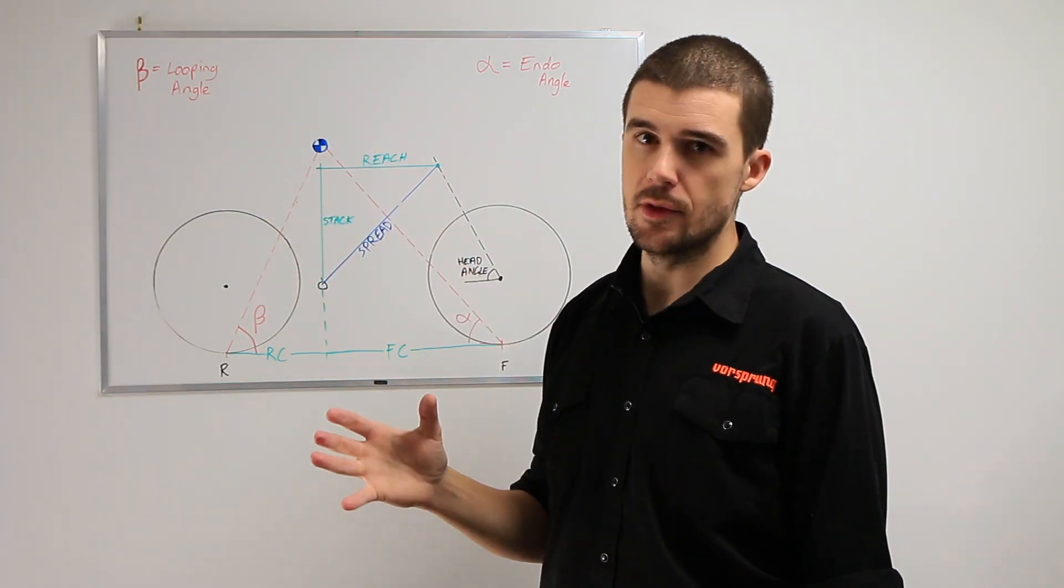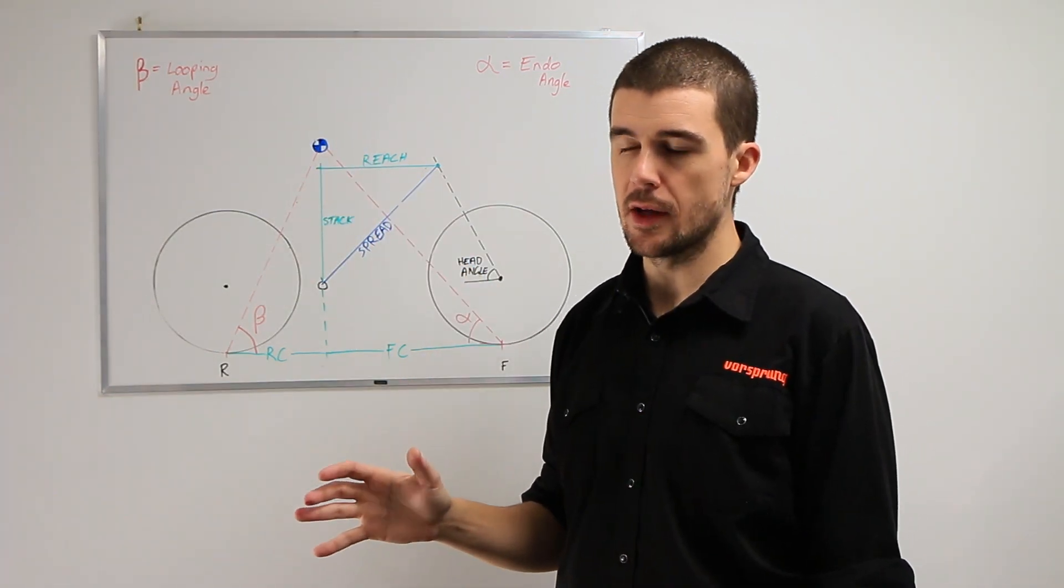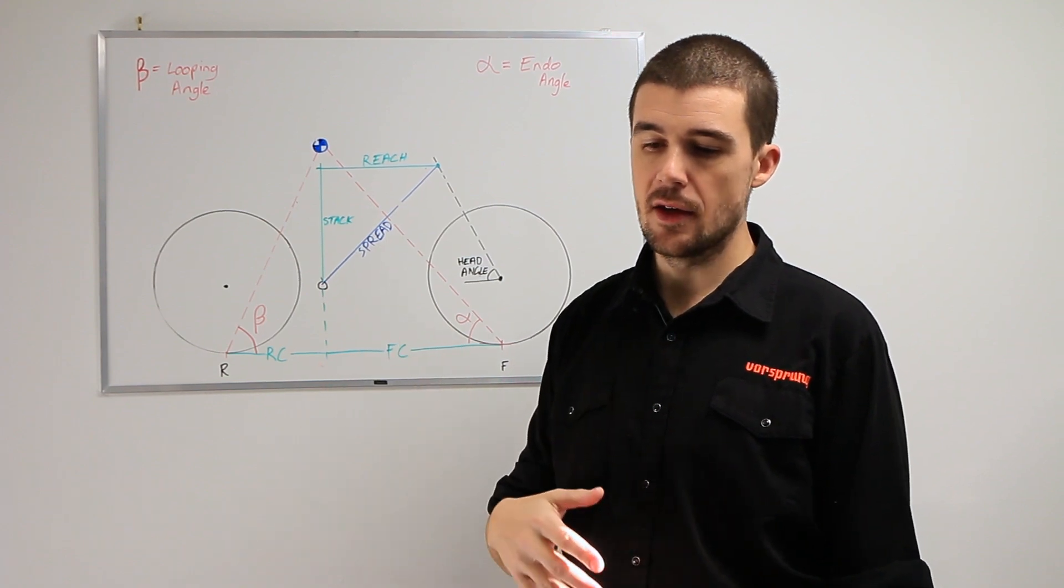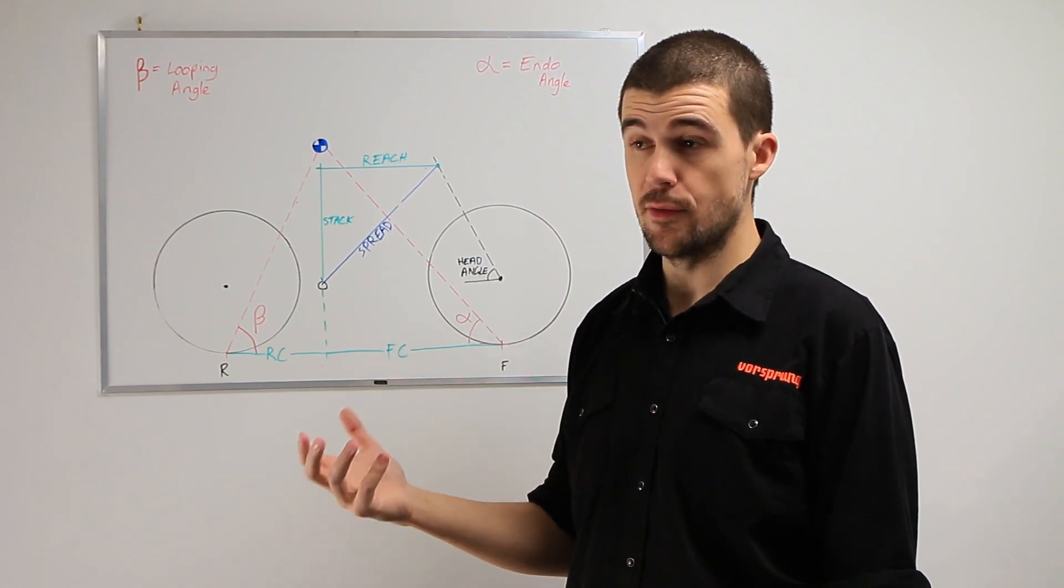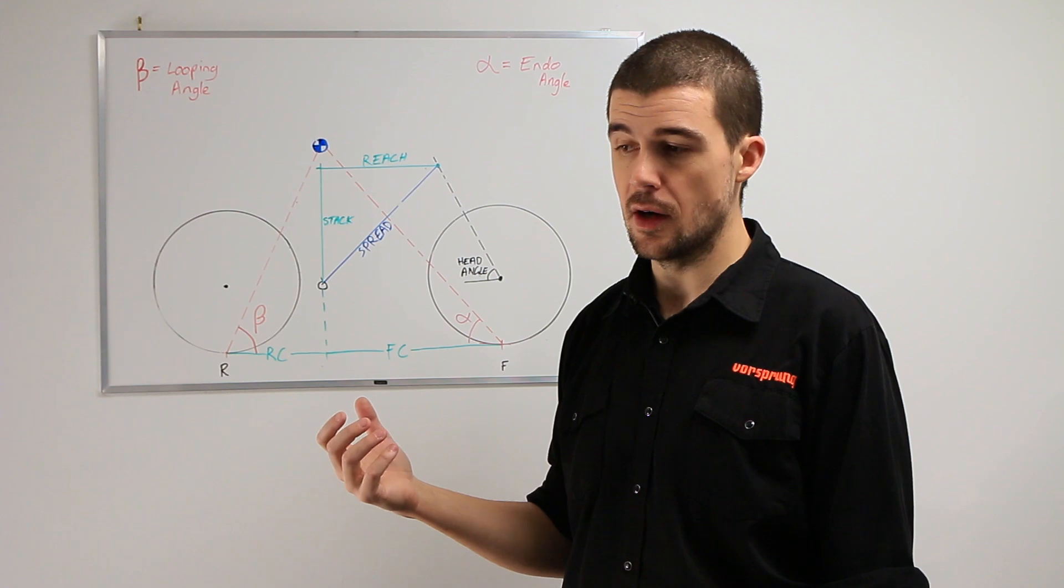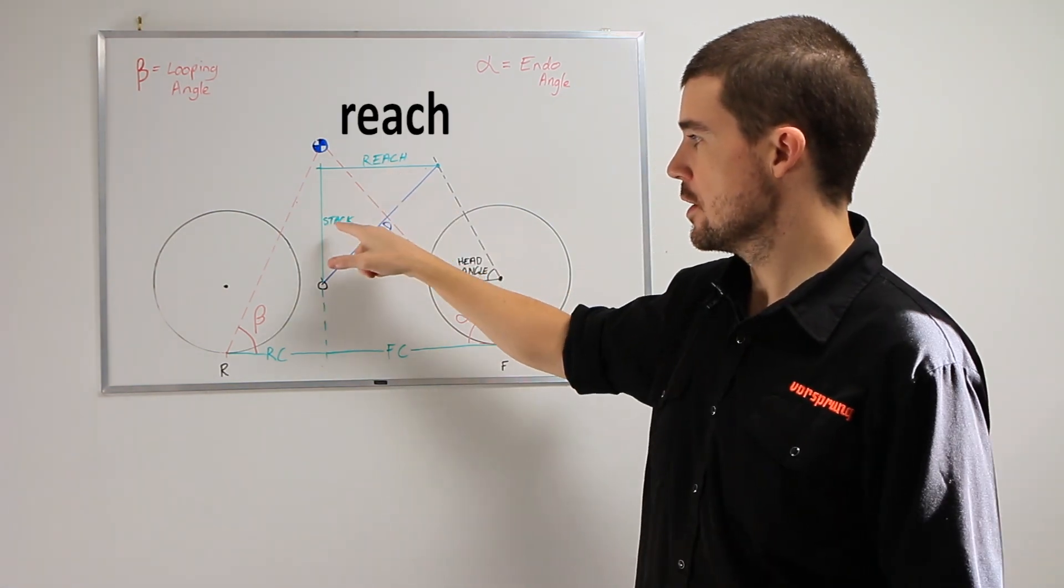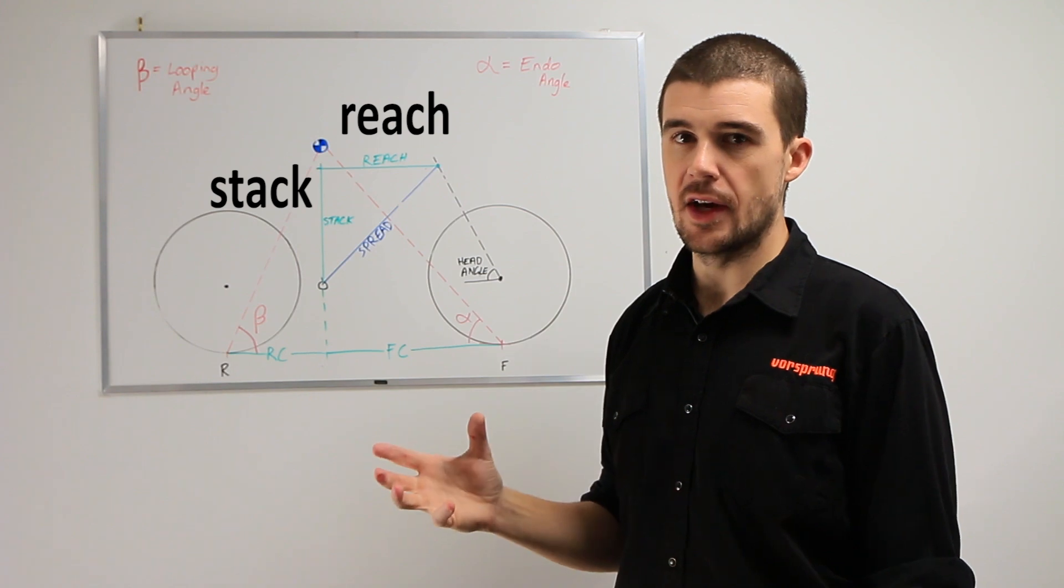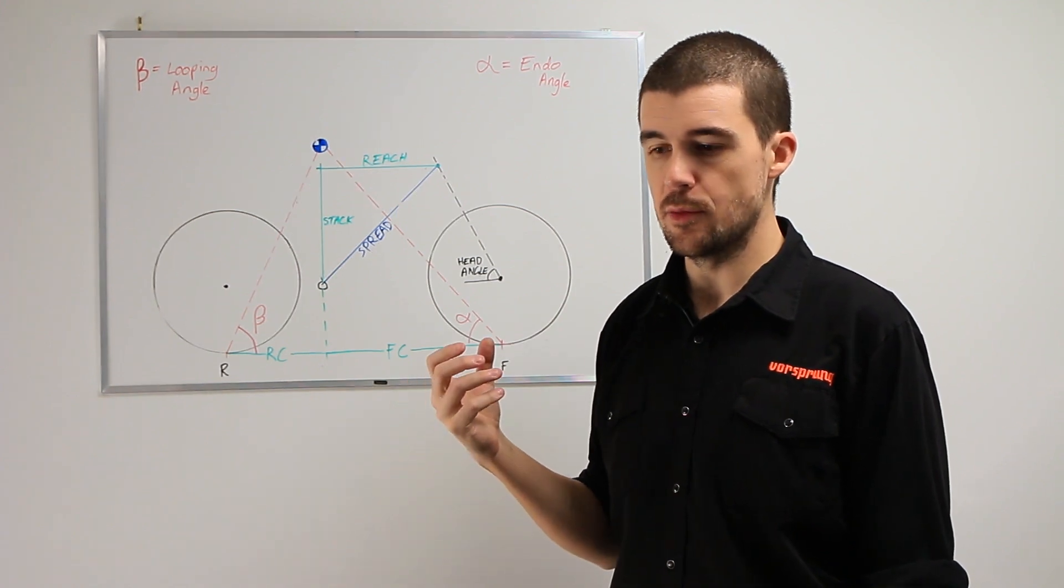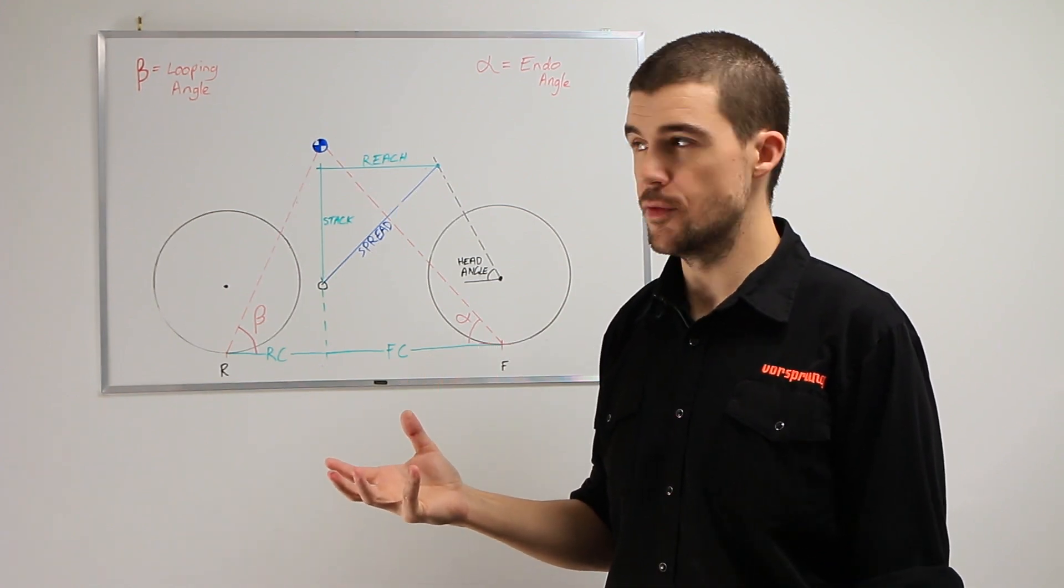Your centre of mass is usually positioned roughly above the bottom bracket. It can be a little bit further back if you are seated and climbing. It can be a bit further forward if you're weighting the front heavily when cornering, for example. What we have here is reach and stack.